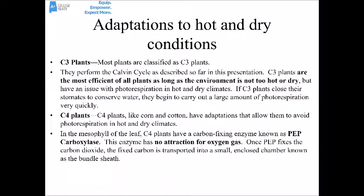Most plants are called C3 plants — they perform the Calvin cycle as described and are the most efficient plants as long as the environment isn't too hot or too dry. But they have a serious issue with photorespiration in hot, dry places: if they close their stomata to conserve water, they carry out a large amount of photorespiration very quickly. Another group, C4 plants — like corn and cotton — have adaptations that let them avoid photorespiration.